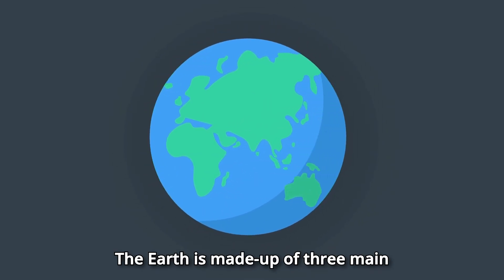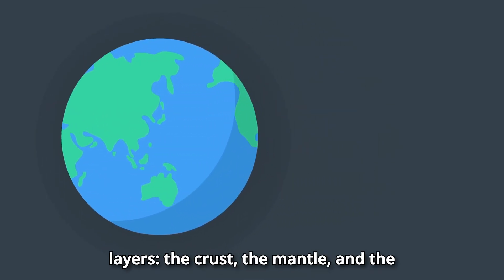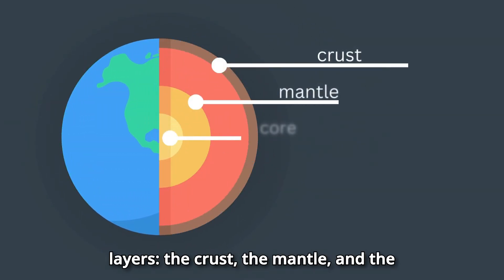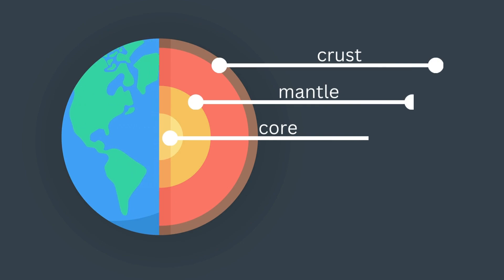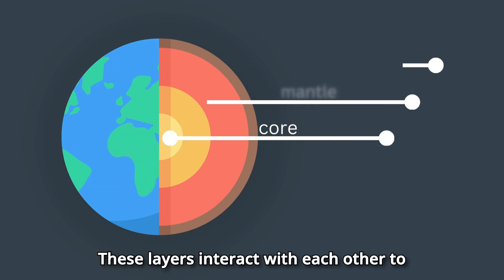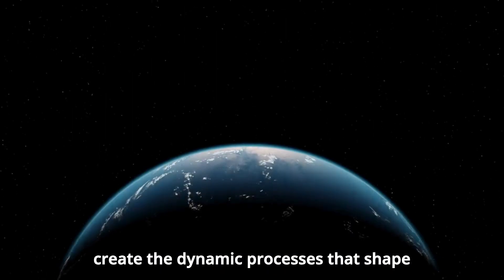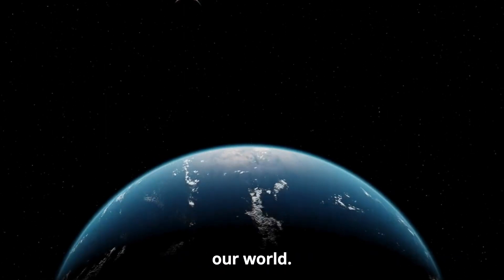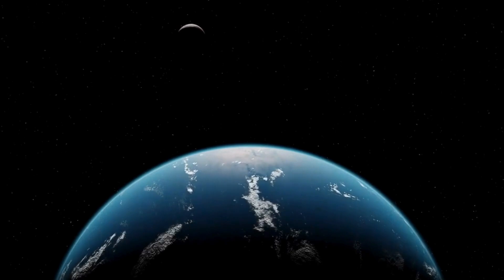The Earth is made up of three main layers: the crust, the mantle, and the core. These layers interact with each other to create the dynamic processes that shape our world.